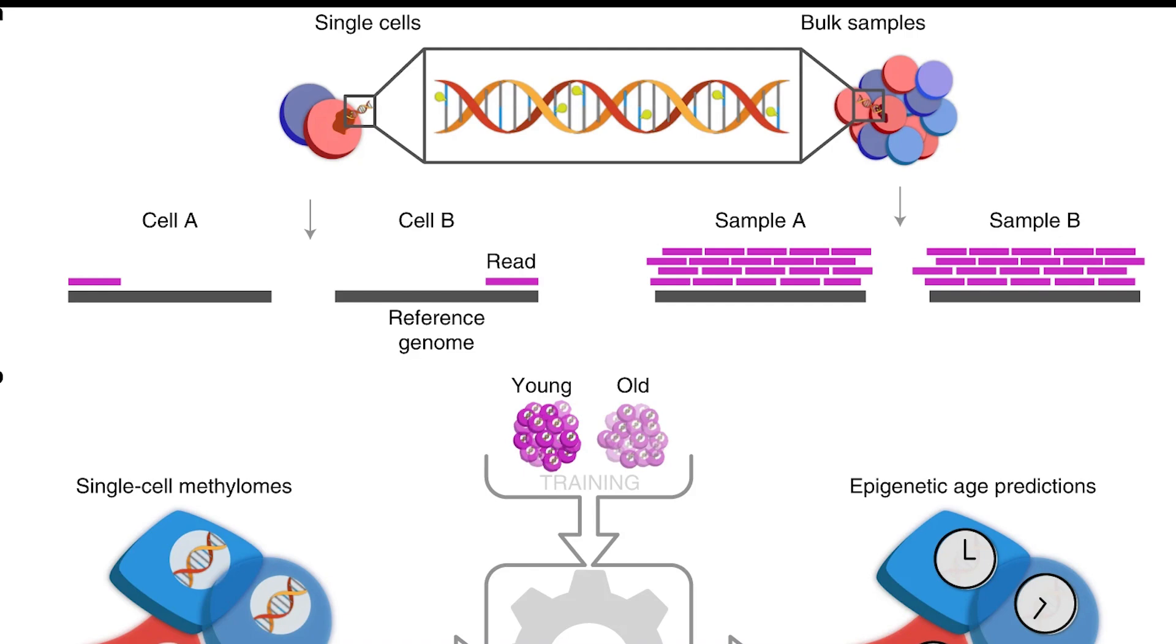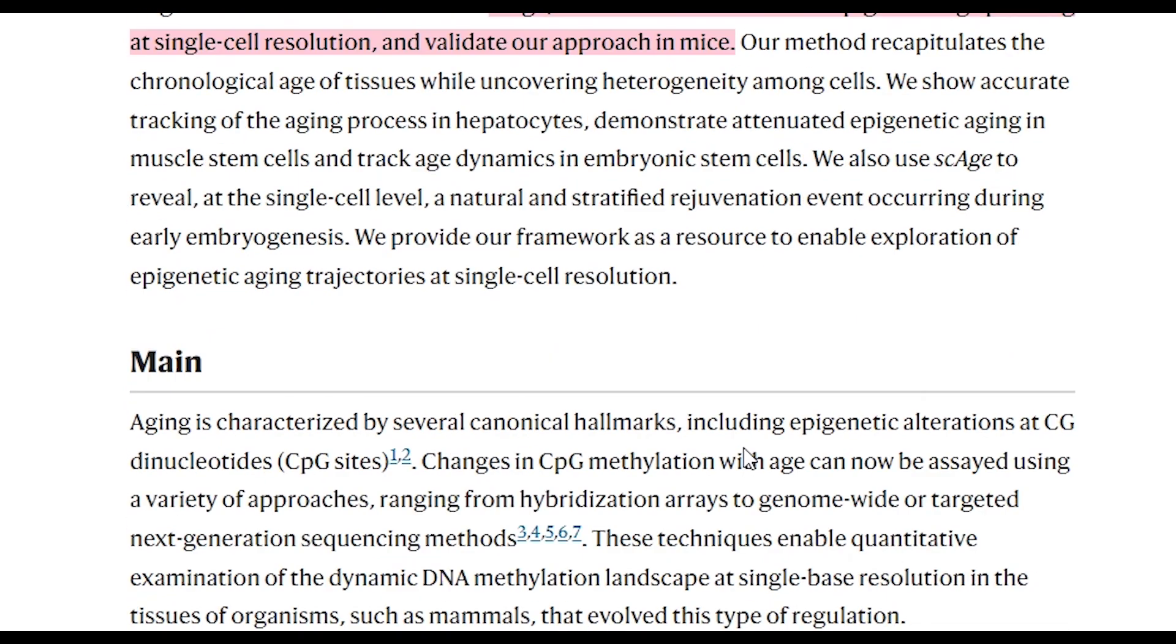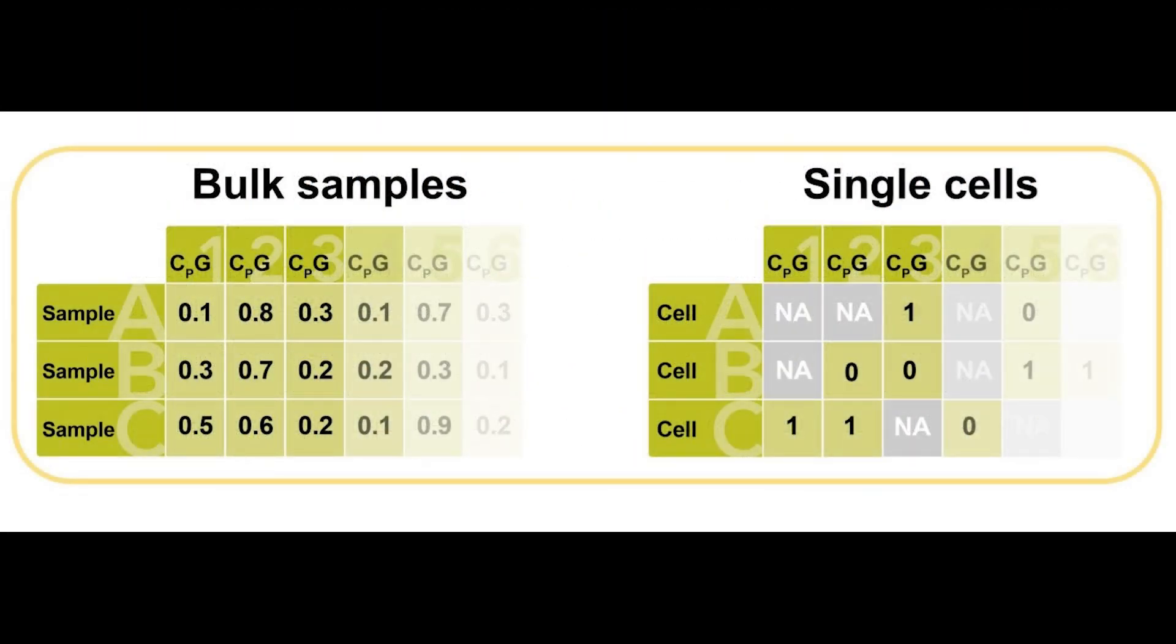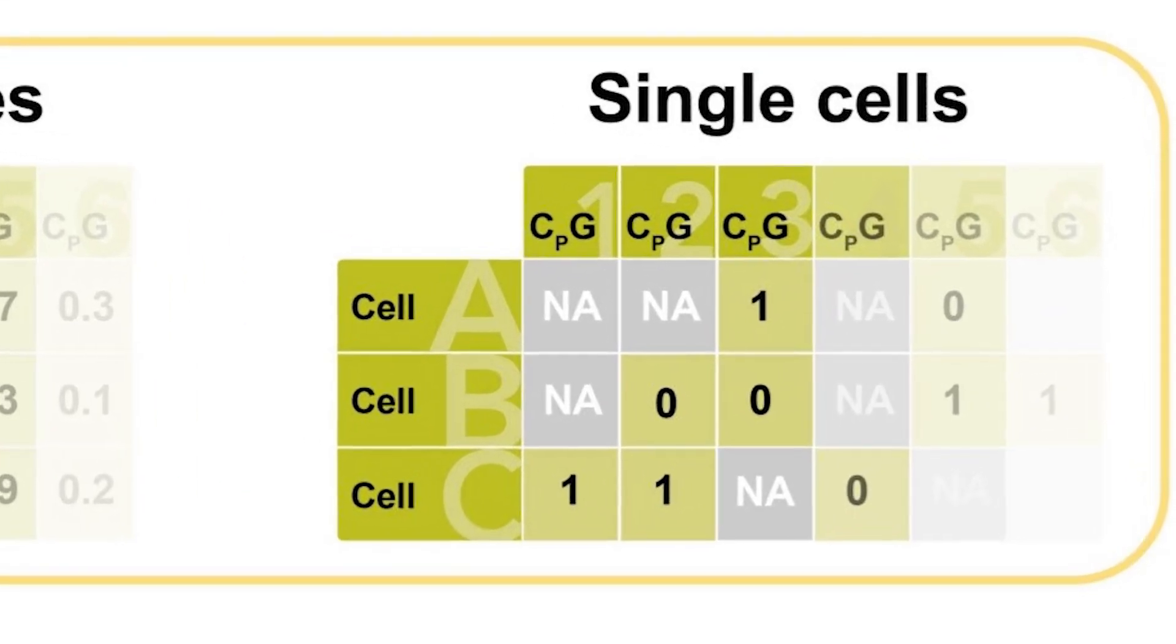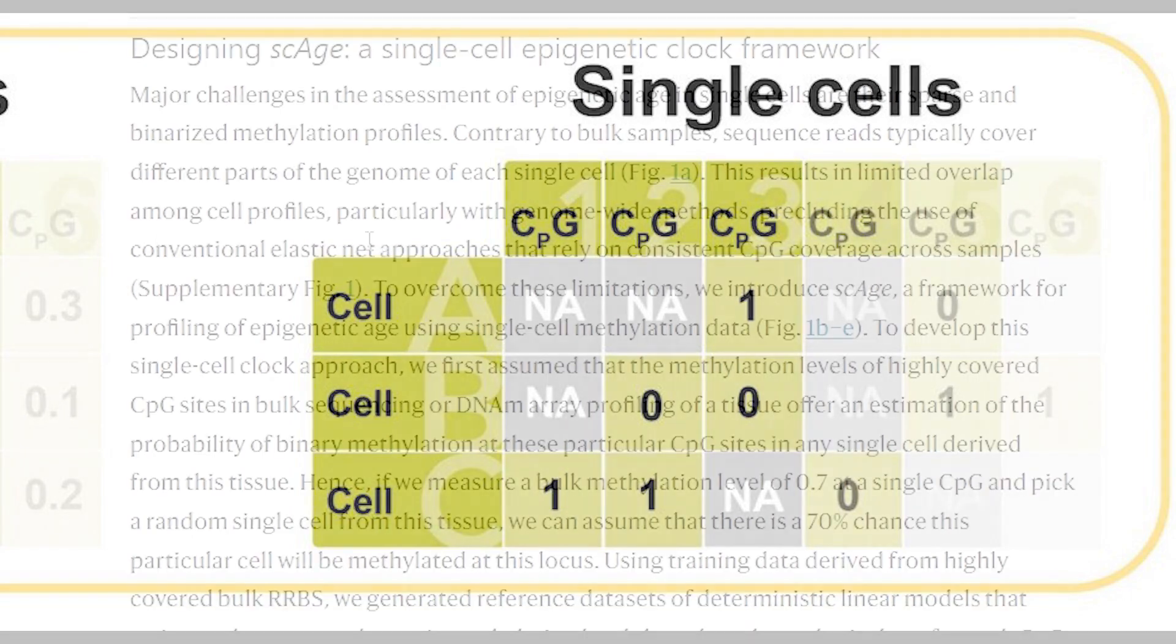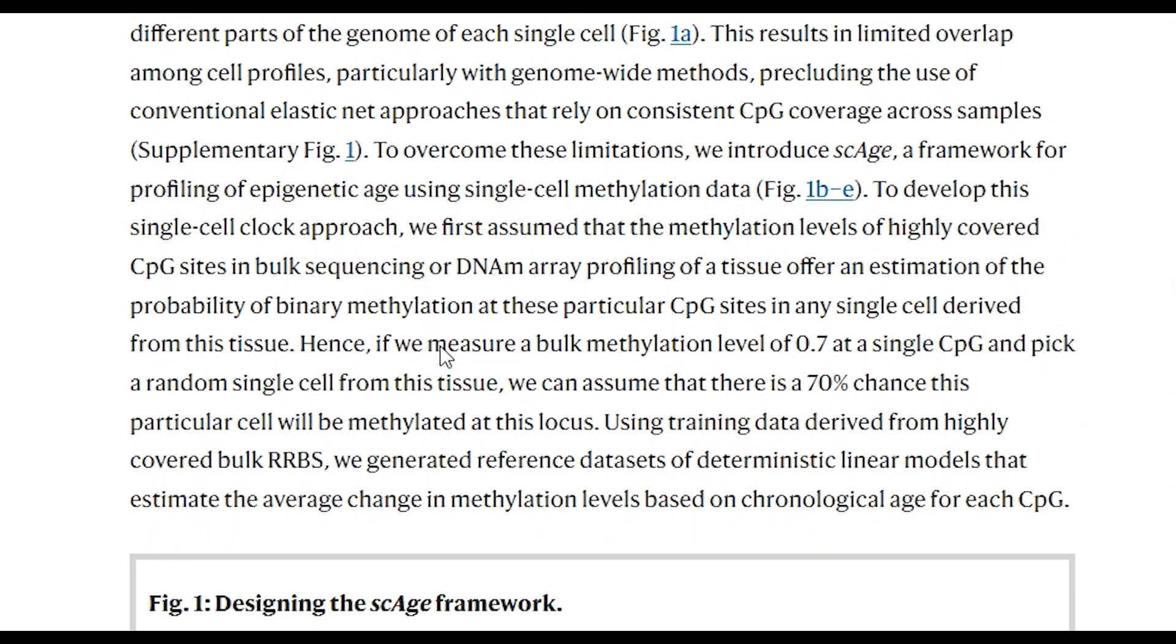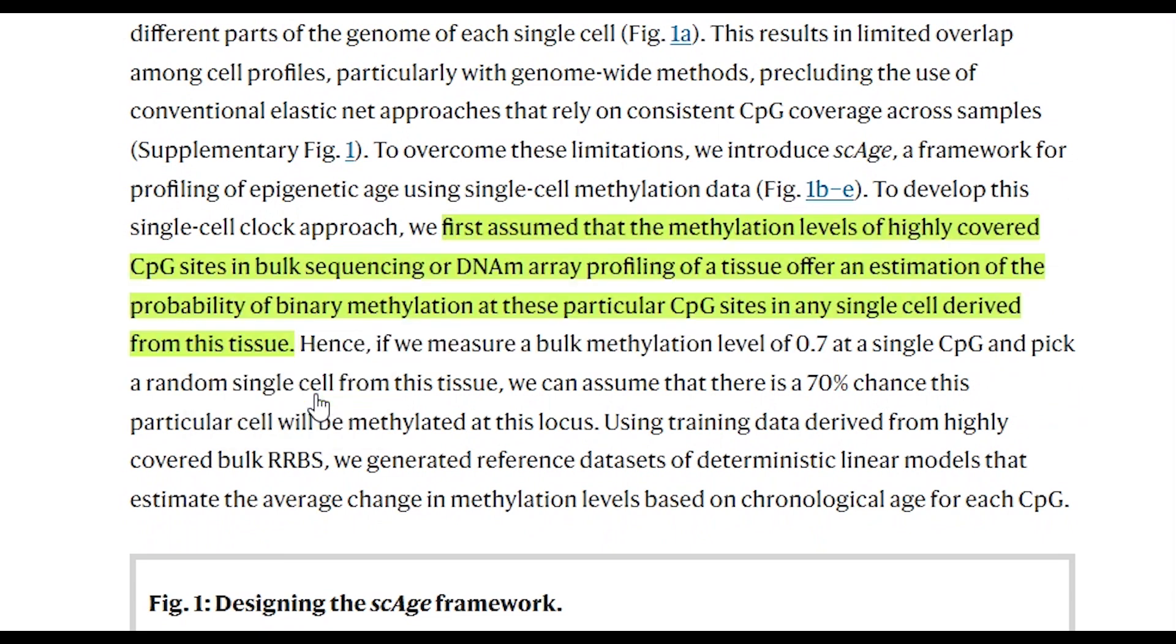So to develop this framework they had to make some assumptions and included some features. So the first problem to solve is the fact that from a single cell you're not going to get a measurement point for each of the different sites of interest. And so to solve that they could use methylation levels of highly conserved sites from bulk tissue samples. And then by having it from the bulk data you could then kind of estimate a probability of binary methylation at particular CpG sites in any single cell from that tissue.